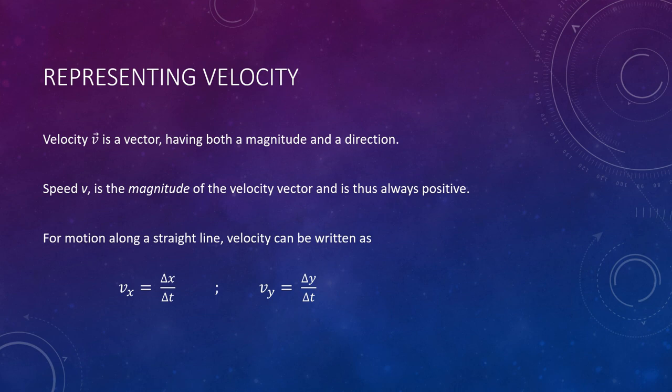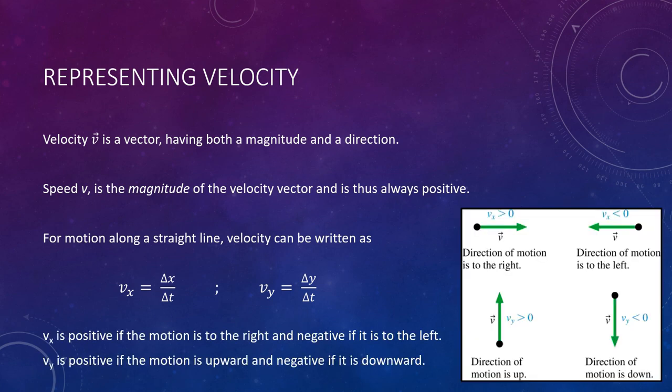In the x direction (horizontal), if you're moving to the right, velocity is positive; if you're moving to the left, it is negative. It doesn't matter where you're located — even if your position is positive (to the right of the origin), if you're moving to the left, you have a negative velocity. In the vertical direction (y), moving upward is positive and moving downward is negative.